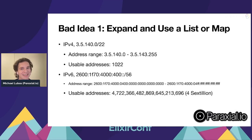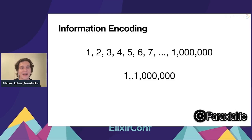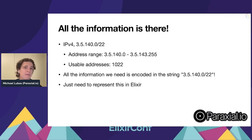Think about information encoding: if you want to encode all integers from one to a million, you don't create a list with literally a million integers — you just represent the range and do comparisons. The idea behind IP prefixes is similar. All the information is in the CIDR notation string, so you can determine if an IP address matches that range just using that. You'd want to represent it in a consistent way, like using the PFX library, which converts a CIDR string to a struct with a bit string and a max length — 32 bits for IPv4 and 128 for IPv6.